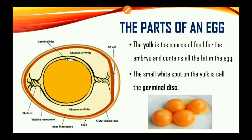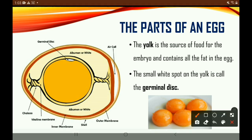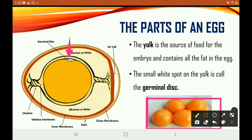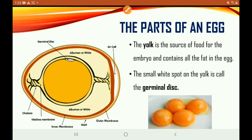The yolk is the source of food for the embryo and contains all the fat in the egg. The small white spot on the yolk is called the germinal disc, and as you can see right here, this is what the germinal disc looks like. You can also see images of the yolk here.